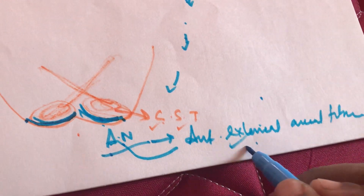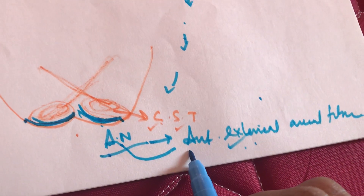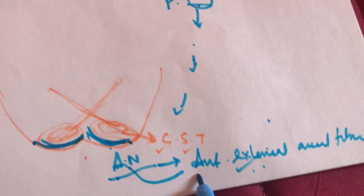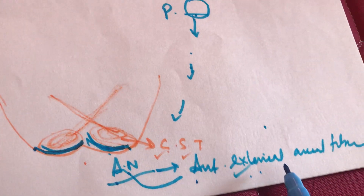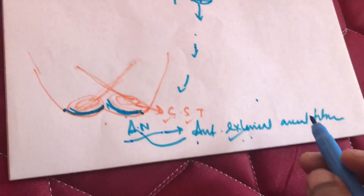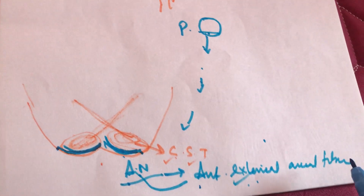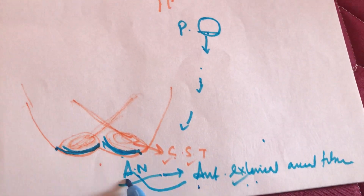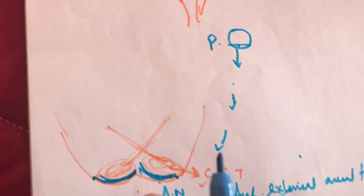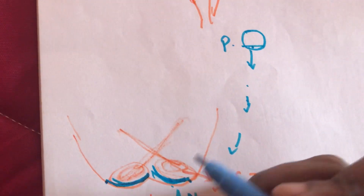Since there are anterior external arcuate fibers, there are also posterior external arcuate fibers and internal arcuate fibers, which we will see next. Anterior external arcuate fibers come from the arcuate nucleus. This concludes the pyramidal decussation section.